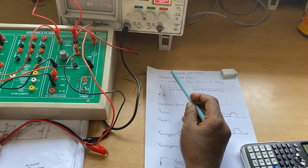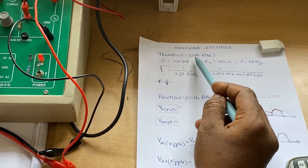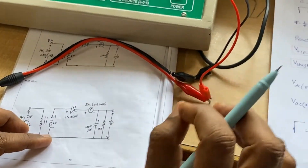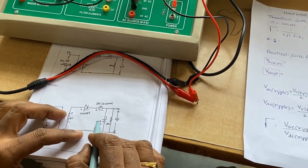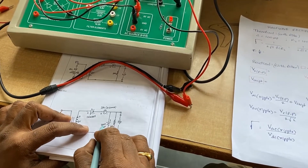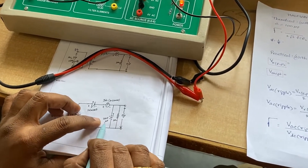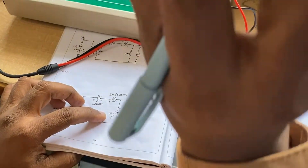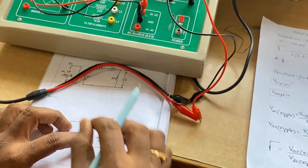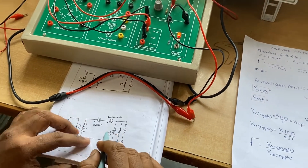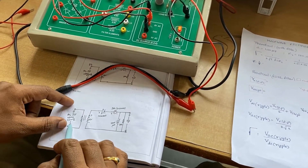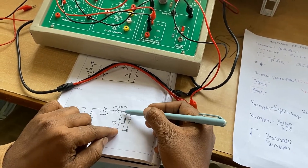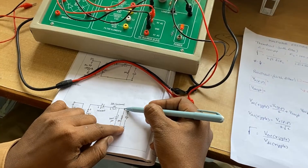Now we are going to do the calculations for a half-wave rectifier with filter. For the with-filter configuration, this is the diagram. What we change is we use a capacitance filter. I am considering 100 µF. The lesser the capacitance value, the more visible the ripples will be.